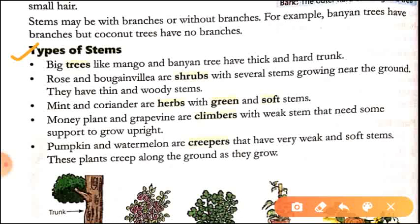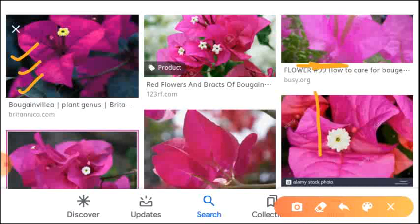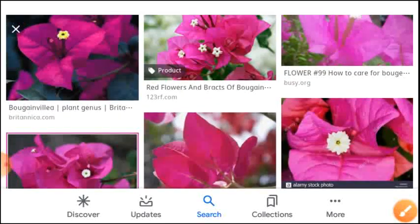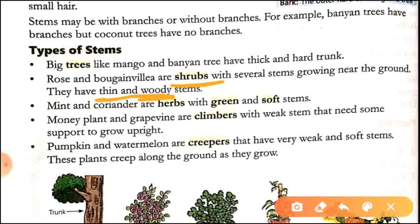Next are the types of stems. Big trees like mango and banyan have thick and hard trunks. Rose and bougainvillea are shrubs with several stems growing near the ground. Have you seen the bougainvillea flower? I am sure you would have seen it. Rose and bougainvillea are shrubs with thin and woody stems.